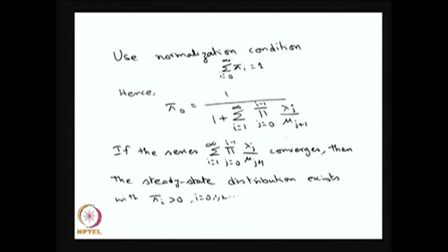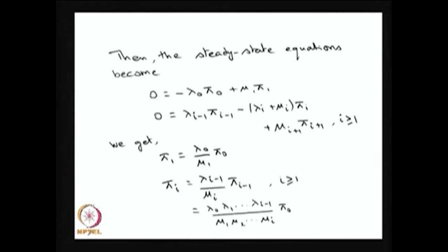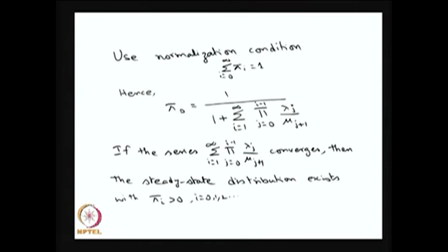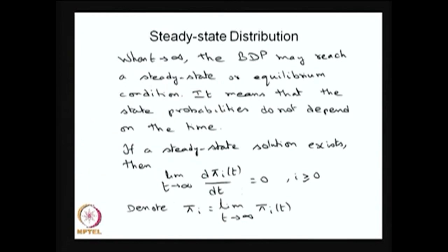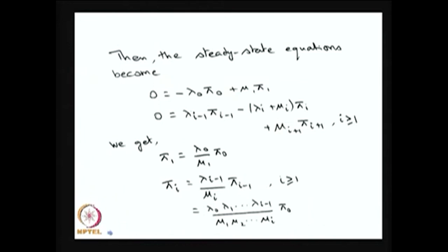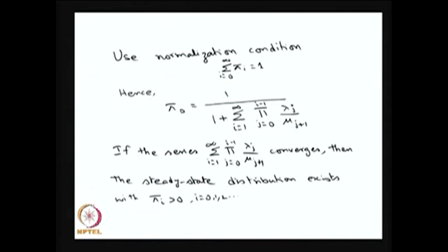Since all pi_i's are in terms of pi_0, as long as the denominator series converges, pi_0 will be greater than 0. Once pi_0 is greater than 0, all pi_i's are determined with their sum equal to 1. Whenever this series converges, there is a steady state distribution with positive probabilities summing to 1. This is the condition for a steady state distribution for a birth-death process, derived using the forward Kolmogorov equation and the normalizing condition.